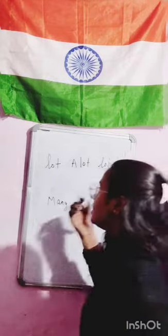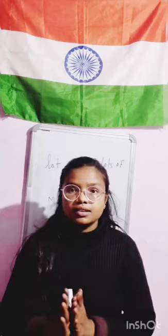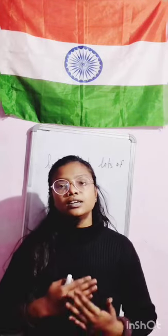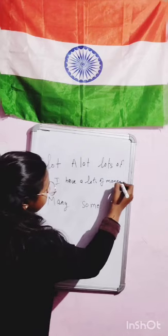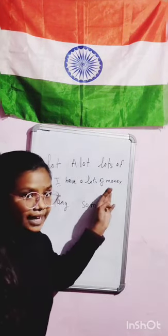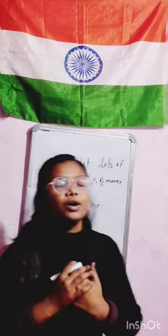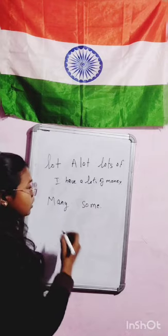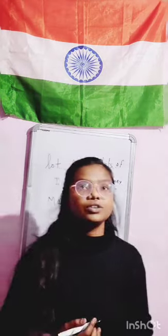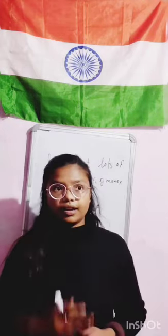Now for 'a lot' and 'lots of' — these are used with uncountable things. For example, you cannot count money, you can only count notes or currency. So I would say 'I have a lot of money,' meaning I have very much money. Similarly: 'I have a lot of clothes,' 'I have a lot of luggage.' That is how we use 'a lot' and 'lots of.'